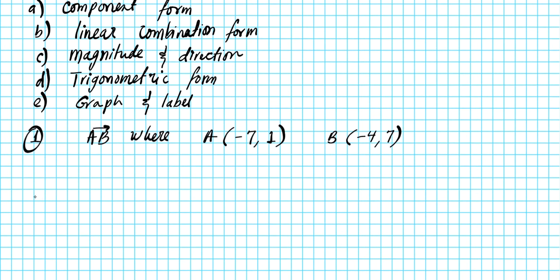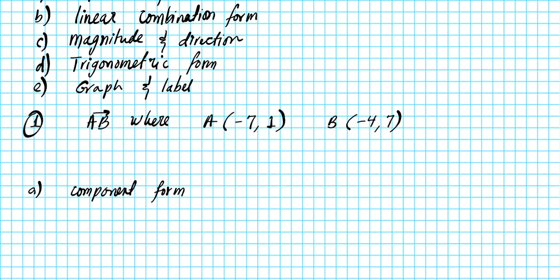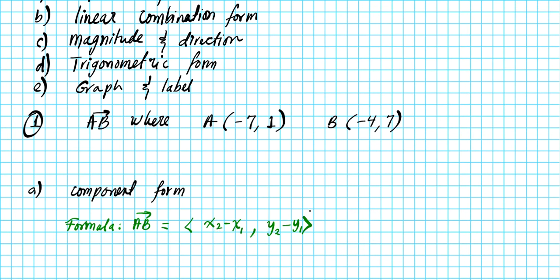For part A, we have to find the component form of the vector. The formula is as follows: given vector AB with initial point (x1, y1) and terminal point (x2, y2), the component form of the vector is ⟨x2 minus x1, y2 minus y1⟩. The twos represent the terminal point and the ones represent the initial point.